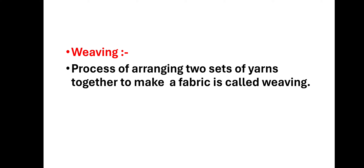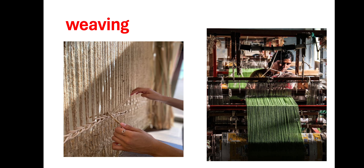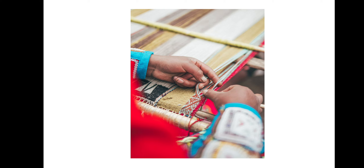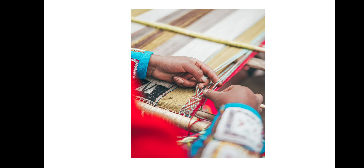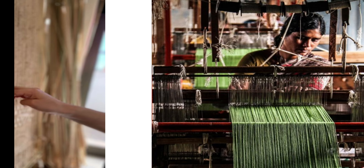Now weaving — यह सारा process है: पहले ginning, फिर spinning, and then weaving। Weaving — yarn के दो sets को जब हम arrange करके रखते हैं उसको weaving कहते हैं। Weaving of fabric is done on looms — looms हाथ से भी operate होते हैं और machine से भी। This is a machine loom.